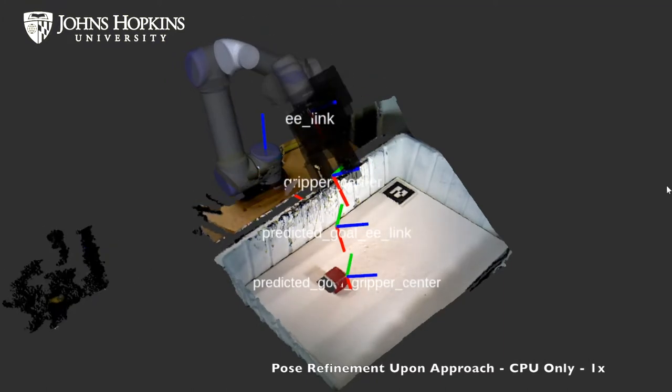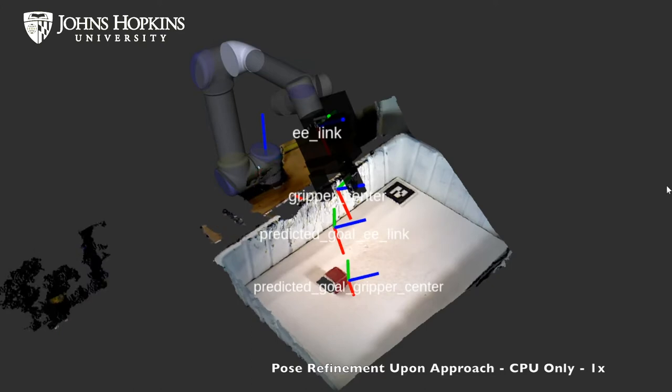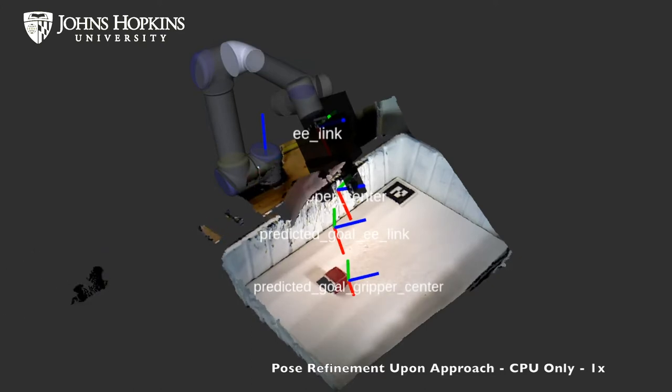Here you can see how using the robot end-effector pose as an input to the neural network allows pose refinement as a goal is approached.